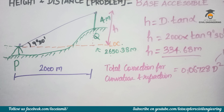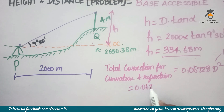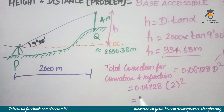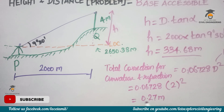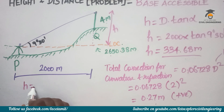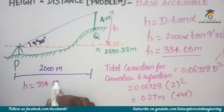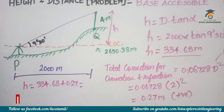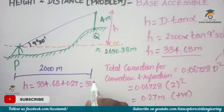The combined correction for curvature and refraction is 0.06728 times d squared, where d is in kilometers. D is 2 kilometers, so the correction equals 0.06728 times 2 squared, which equals 0.27 meters. This is a positive curvature correction.